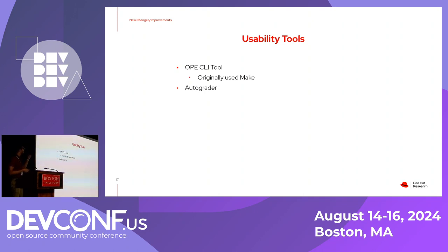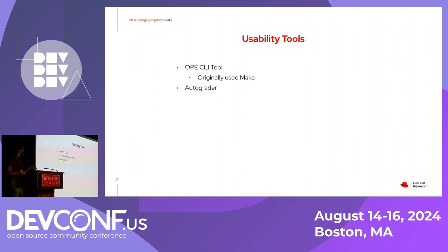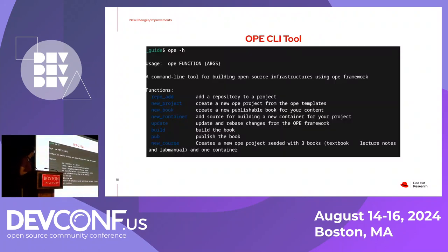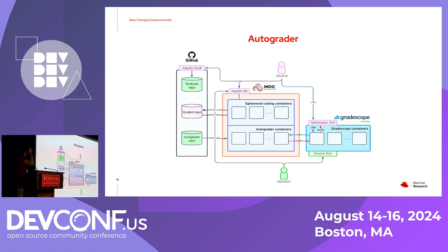We originally used Make for that, but an intern named Key Lee worked on this OPE CLI tool so you don't have to interface with Make directly. We also have an autograder that runs in the same environment as the students' containers — it's essentially a Flask web application. Students can make a POST request to the web server with the submission of their homework. It will send them back their results and also send them to Gradescope so professors or TAs can see the results. The OPE CLI tool lets you do all of these things, and the autograder architecture runs in the same environment as the student containers.